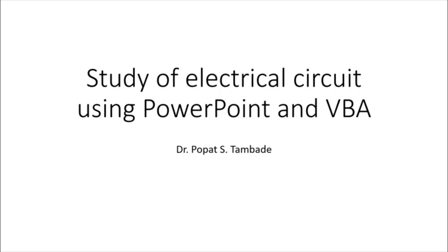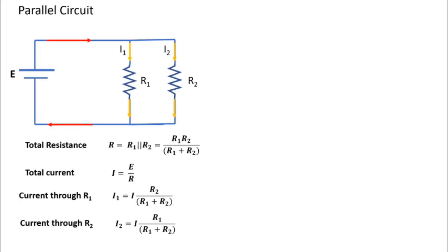I am going to explain how to use VBA to calculate current through a circuit using formulas for current and resistance. I have taken here a simple parallel circuit. We have a circuit with a battery of EMF E and two resistances R1 and R2 in parallel. The total resistance is R = R1*R2 / (R1 + R2).